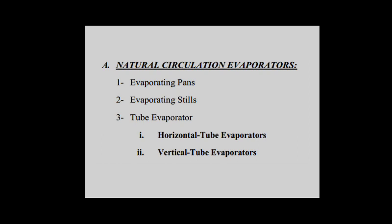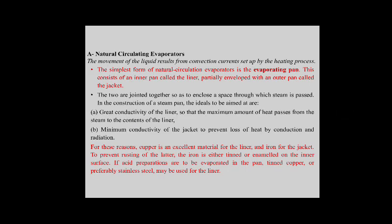Natural circulating evaporators work by movement of liquid resulting from convection currents set up by the heating process. The simplest form is the evaporating band. This consists of an inner pan called the liner, partially enclosed in an outer band called the jacket.